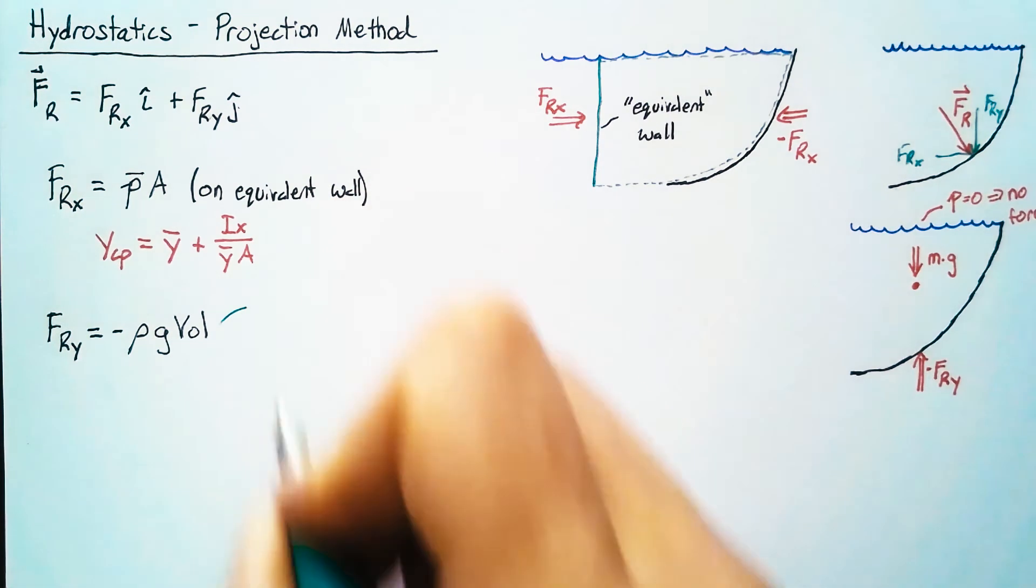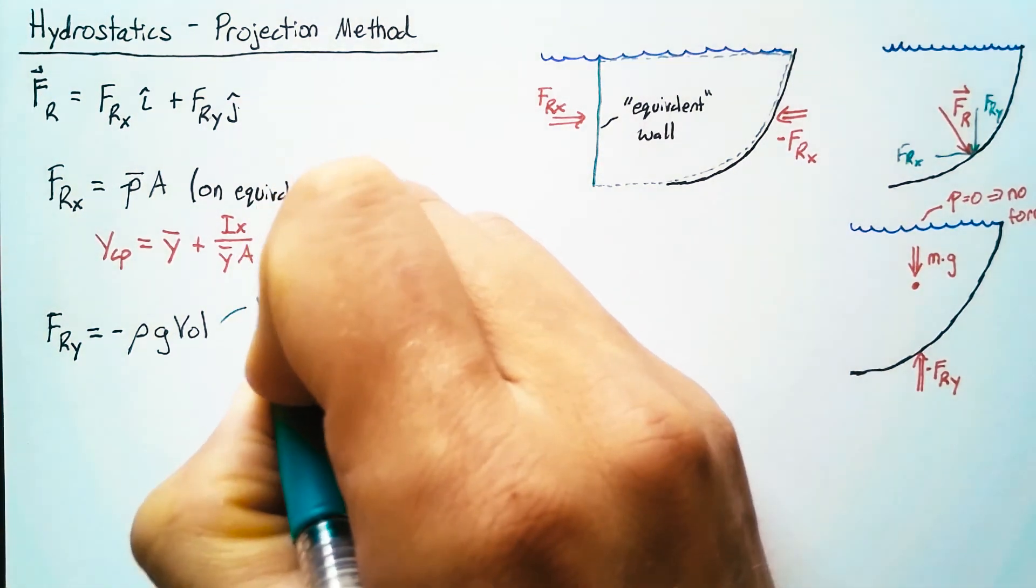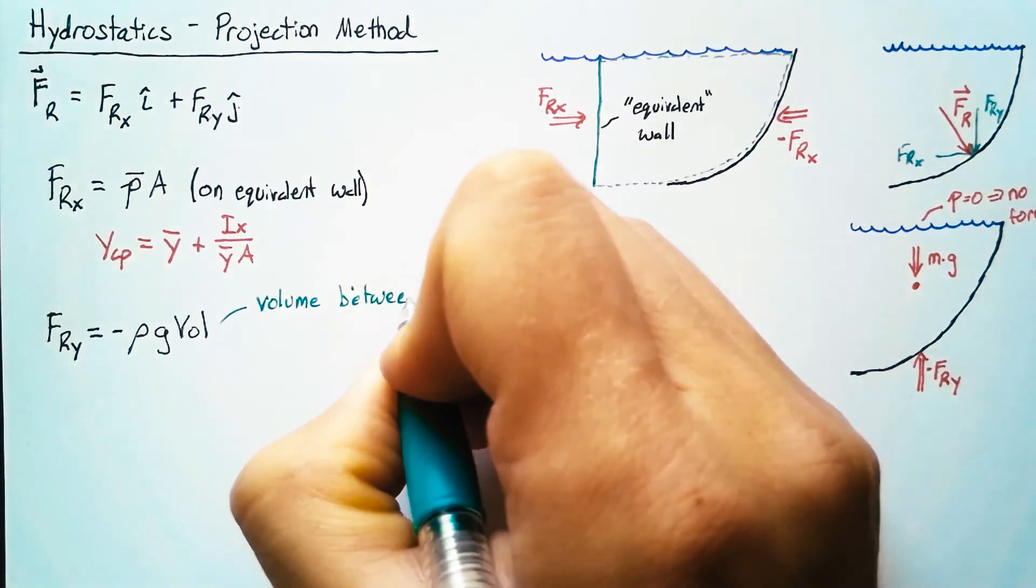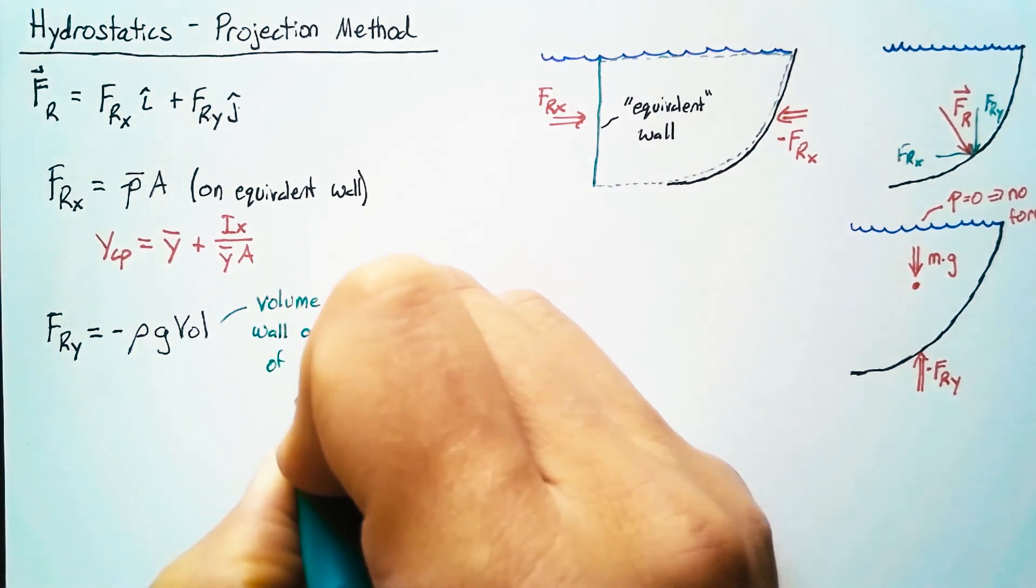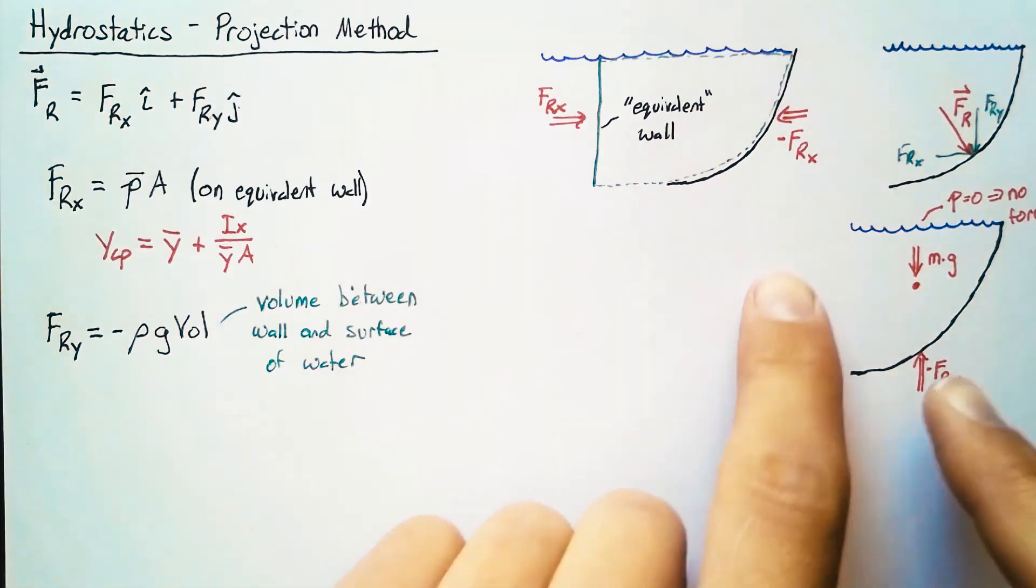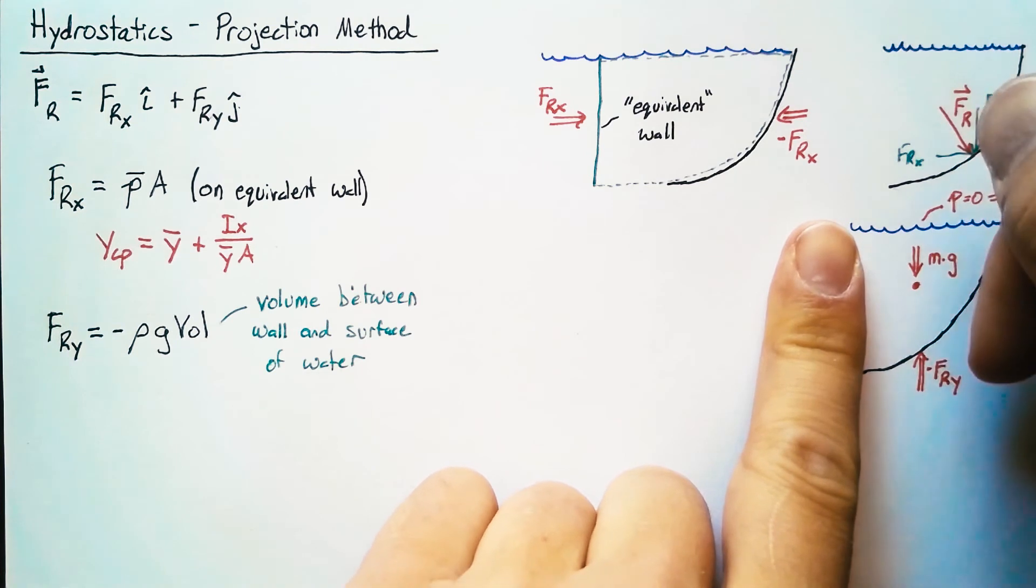I want to go ahead and write out exactly what volume I'm talking about here. This is the volume between the wall that we're interested in and the surface of the water. So for us that's just the volume of water that's sitting on top of this wall and pushing down on it.